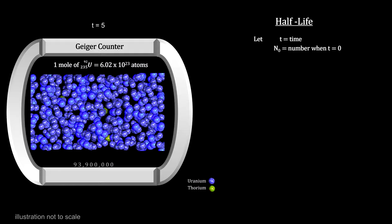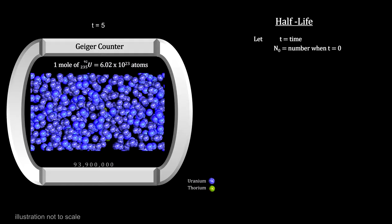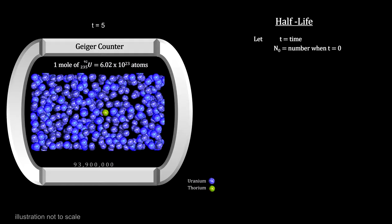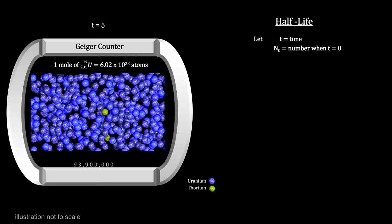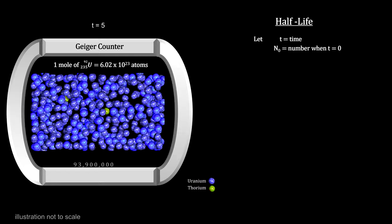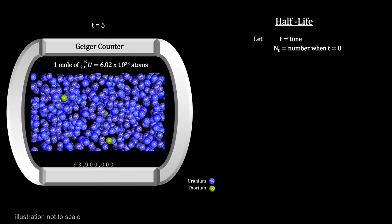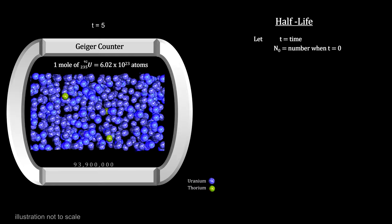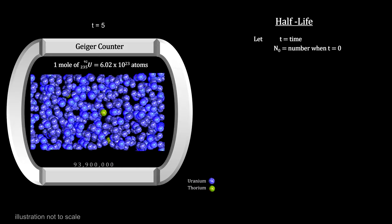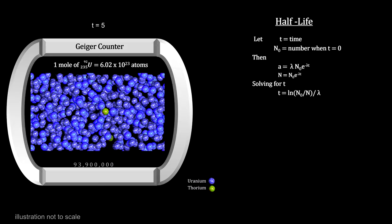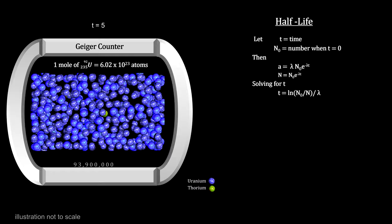Both the activity rate and the number of radioactive nuclei vary over time. As a sample decays, the number of radioactive nuclei decreases. With fewer radioactive nuclei, the activity rate also decreases.